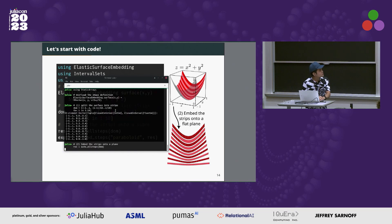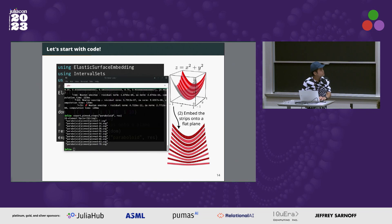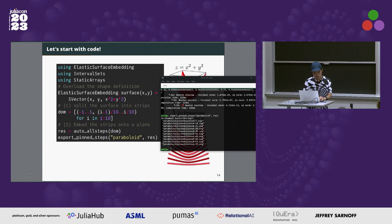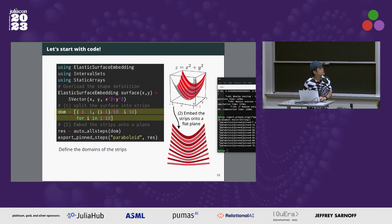By copy and paste, we can try the script. First, define the shape of the target surface. Second, define the domains of the strips. We need to only calculate these 10 strips because the target surface has four-fold symmetry. The next function calculates the embeddings of strips automatically, and the last function exports the strips with SVG format. The exported files look like this - we have 10 files which represent the embeddings.